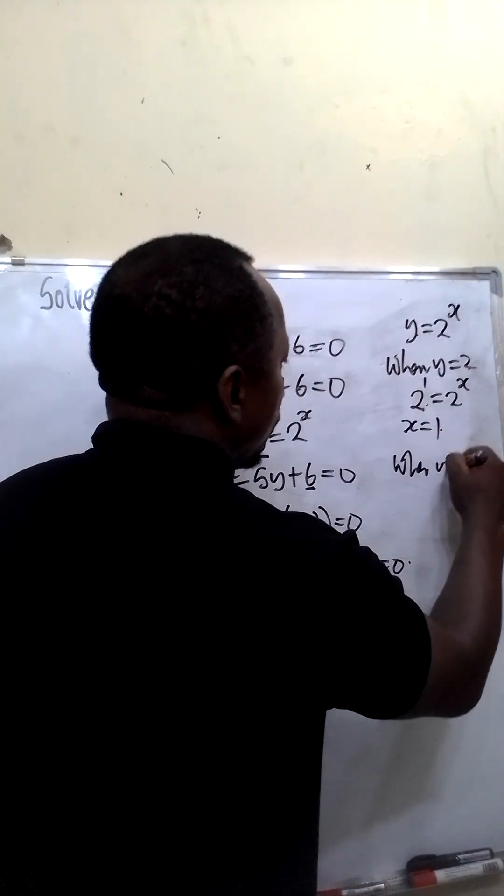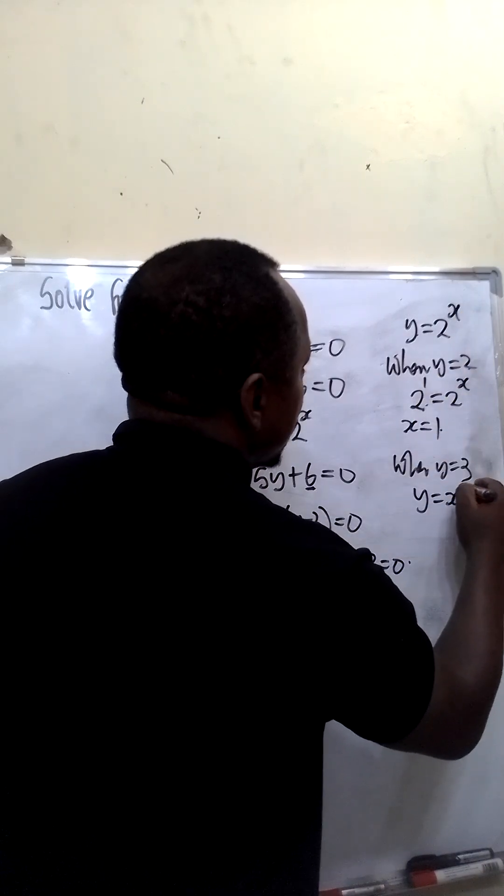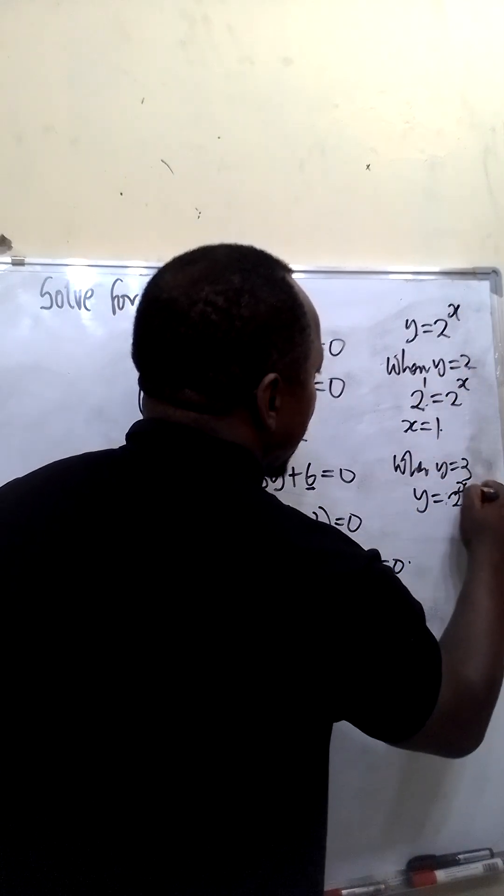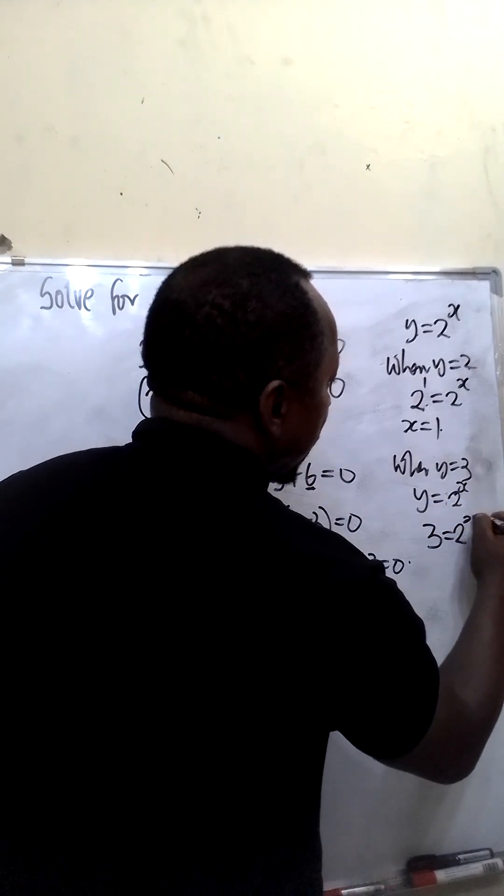And also, when y is equal to 3, what is the value of x? We have y equal to 2 raised to the power x. Now this will become 3 equal to 2 raised to the power x.